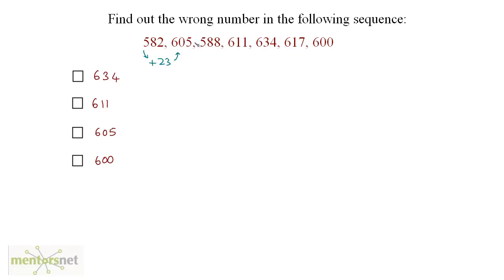Now let's take the next pair: 605 and 588. We need to subtract 17 from 605 to obtain 588. For the next pair, 588 and 611, we again add 23 to get 611 from 588.